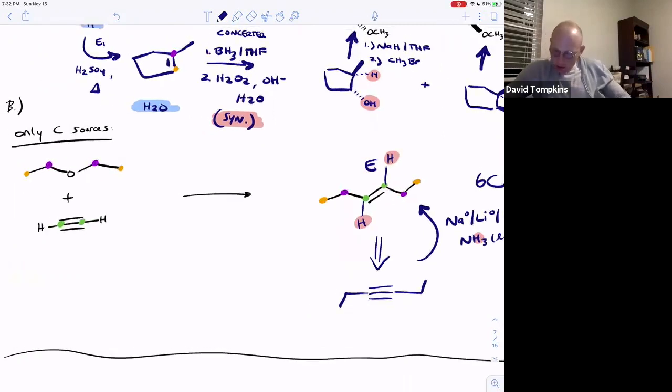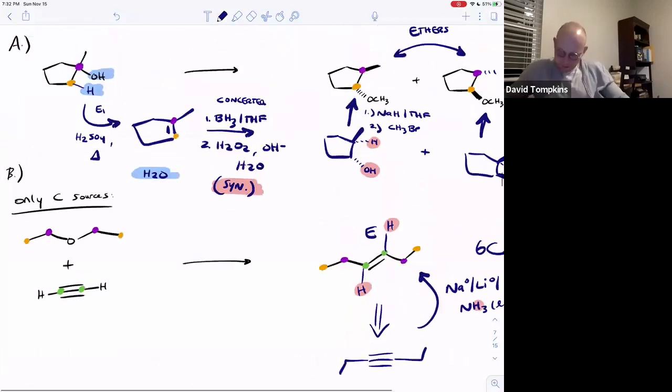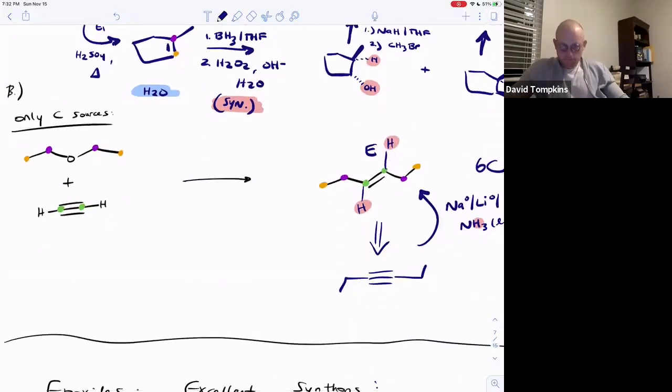Now, we can kind of see where we're going because the alkyne, we now need to take off the hydrogens one step at a time and add these ethyl branches. And we've done that before with chain elongation.